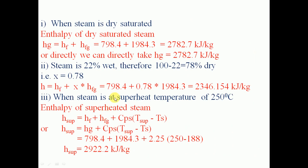In the first case, when steam is dry saturated: the steam is heated from 0 degree Celsius to the saturation temperature, then all the water is completely converted into steam — that is dry saturated steam. The enthalpy of dry saturated steam HG equals the sensible heat, which is the amount of heat required to raise temperature from 0 degree Celsius to saturation temperature.